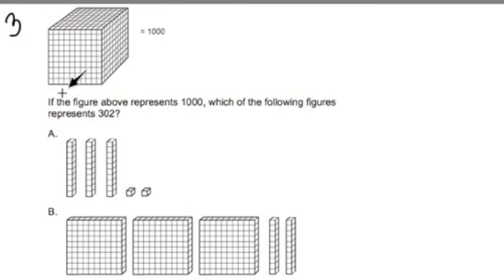Alright, but let's start by reading it over. It says, if the figure above represents a thousand, which of the following figures represents three hundred and two? Let me put a box around that thousand, and the three hundred and two. Those are key numbers that we're going to be looking for. Now, the thousand is here.